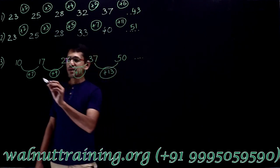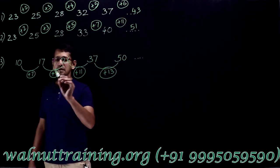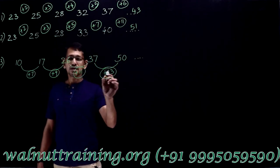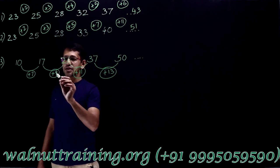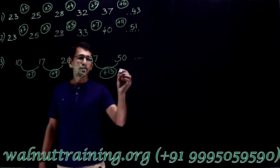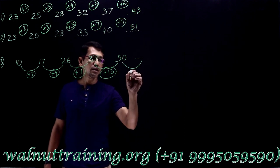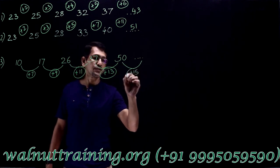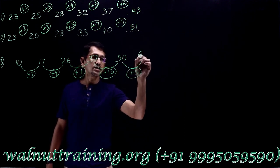The differences are plus 7, plus 9, plus 11, plus 13. These are consecutive odd numbers. So, the next odd number would be 15. So, 50 plus 15 is 65.